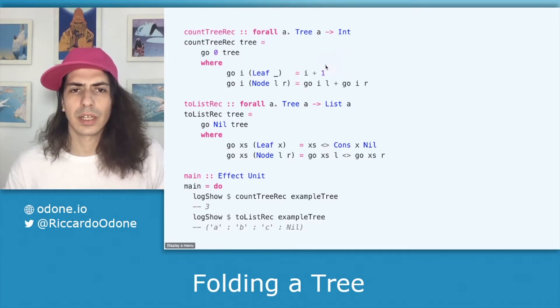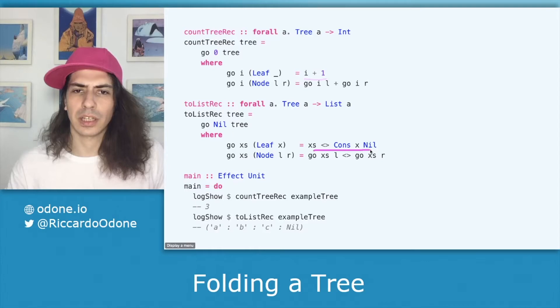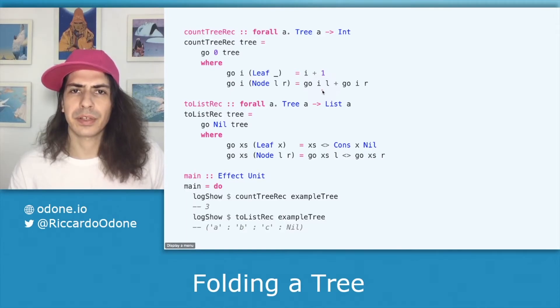Then we have the calculation we run when we are in the leaf. In this case we are doing a plus one and in this case we are concatenating the character in the leaf. The last difference is how we combine the results in the recursive case which is a plus when we are counting the amount of leaves or a list concatenation when we are concatenating the characters in the leaves.